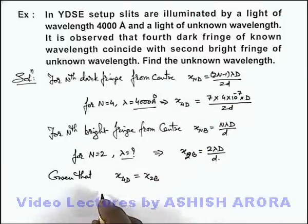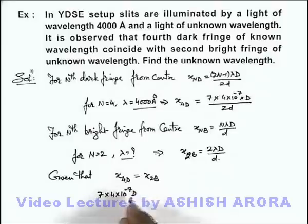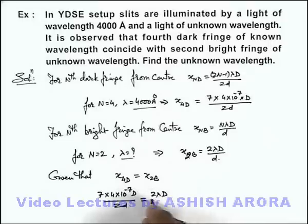So if we substitute the values here we can see we are getting 7×4×10^-7 D/2d is equal to 2λD/d.